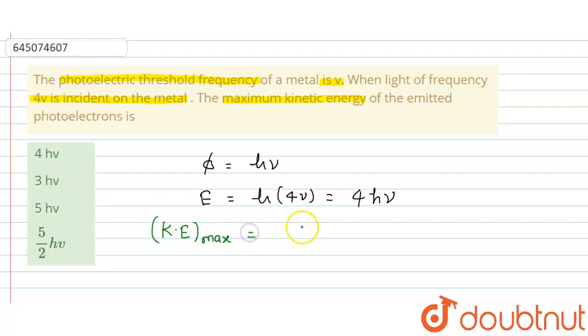Maximum kinetic energy of a photoelectron is given as energy of incident photon minus threshold energy. This is threshold energy.